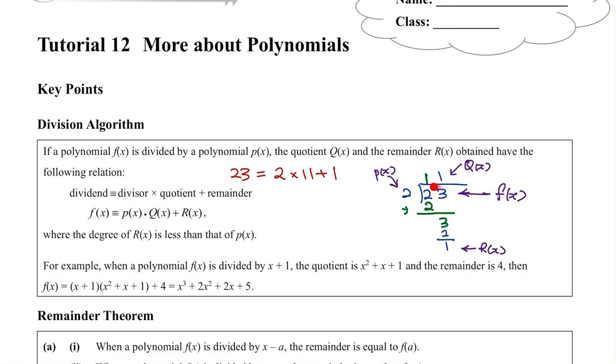So now that you know this whole thing, remember 23 is the f(x). f(x) will equal to this times this. So f(x) equals p(x) times q(x) plus the remainder, plus r(x). And the degree of the remainder is always less than p(x), the divisor. That means the remainder has to be smaller than them.